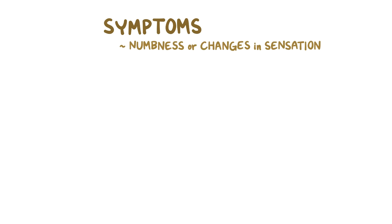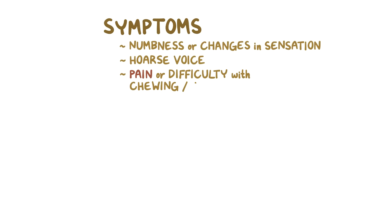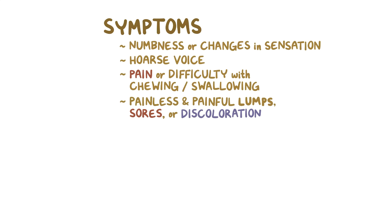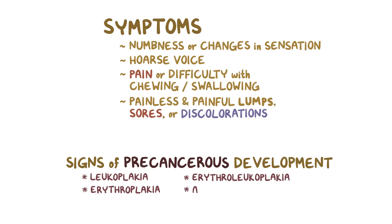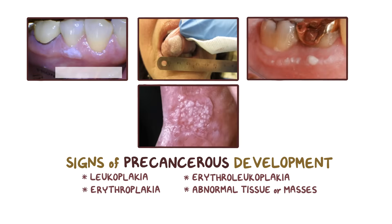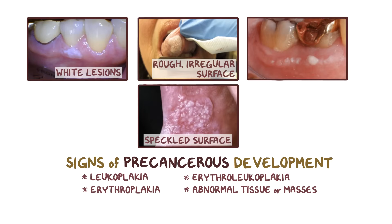The symptoms of oral cancer include numbness or changes in sensation in the mouth and throat, a hoarse voice, pain or difficulty with chewing or swallowing, and both painless and painful lumps, sores, or discolorations in the mouth that don't heal. Signs of precancerous development include areas of leukoplakia, erythroplakia, and erythroleukoplakia, or any other abnormal-appearing tissue or masses. In other words, white or red lesions without an obvious traumatic source and with a rough, irregular, velvety, or speckled surface are all ones to look out for.